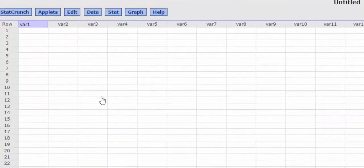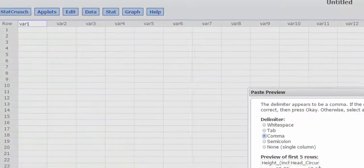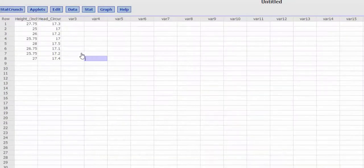I'll highlight the VAR one column. I'll press Ctrl V. There's my preview. Okay, there's my data.